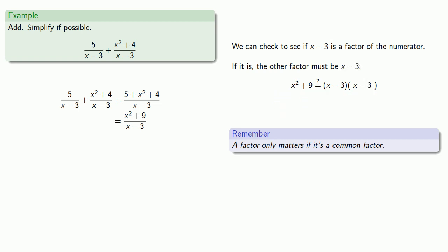But if we expand out the right-hand side, we see it doesn't work. So this means that x squared plus 9 might factor, but any factorization we get won't be useful, so we'll leave it.